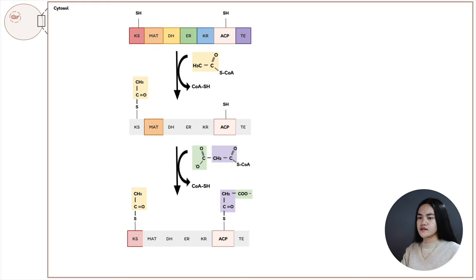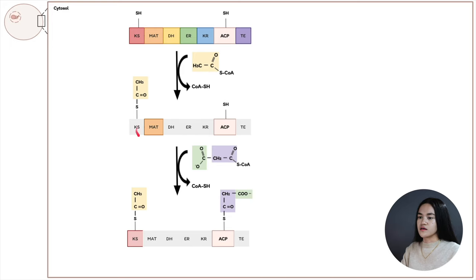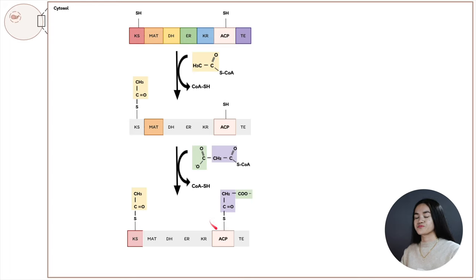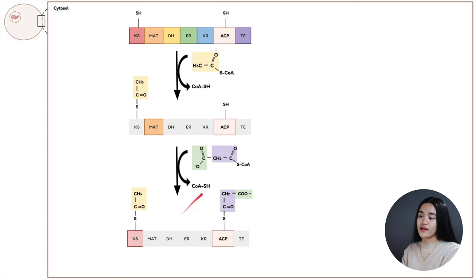The MAT domain is highlighted here because it's catalyzing the transfer of the malonyl group to ACP. Now the complex is charged with an acetyl and a malonyl group, so it's ready for the process of fatty acid synthesis.